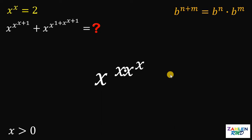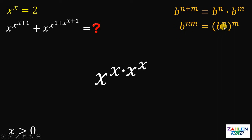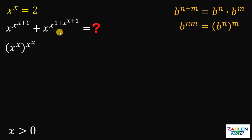Let's rearrange some terms a little bit. Here's the second law of exponents: if we have b raised to n times m, it is equivalent to b raised to n raised to the power of m. Therefore, x raised to x times x raised to x is equivalent to x raised to x raised to the power of x raised to x. Let's stop here because we now know the value of this expression since x raised to x is just 2. Let's set aside this result and get the second expression.